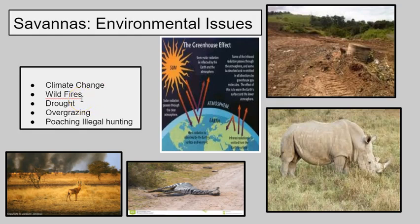We're also going to see some wildfires occur here, just as we did in our temperate grassland biome. This is usually caused by lightning that strikes and catches fire due to how dry our grasses are. We're also going to see drought, caused by the very little rainfall in this biome, as well as overgrazing from herbivore animals that eat up all of our grass.